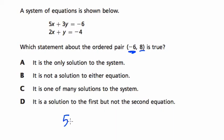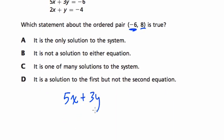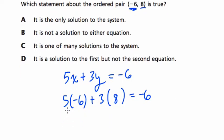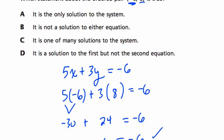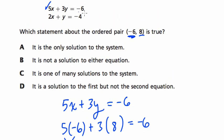I'm going to write this down here. 5x + 3y = -6. So x is -6, right? 5 times -6 plus 3 times y, which is 8. Does this equal -6? Let's see. Well, 5 times -6, that's -30. And 3 times 8 is 24. If I add these two, yes, I get -6. It's balanced. So that means that this point is a solution for the first equation because it works. It balances the equation.